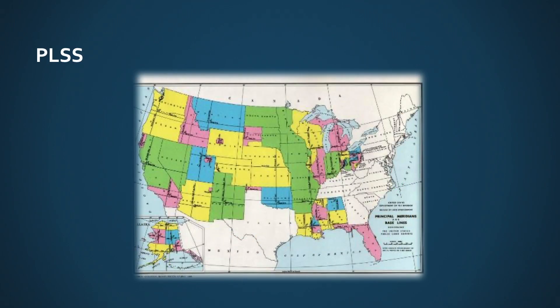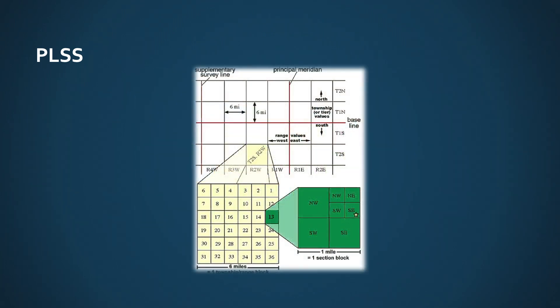The second type of system is the public land survey system, which is based on a systematic framework. When we talk about the public land survey system, we use special terms such as townships, ranges, sections, and quarter sections. All of these are called aliquot parts. Within each township, there are 36 sections all created at the same point in time. The public land survey system is based on these aliquot parts — parts of sections, sections, townships, and ranges.